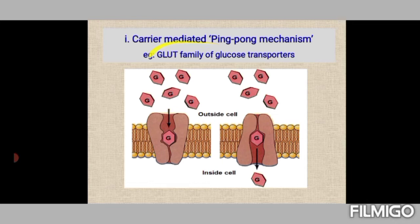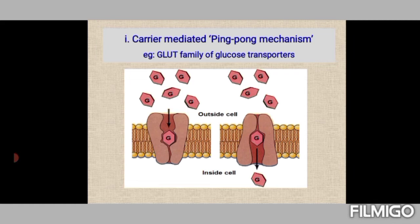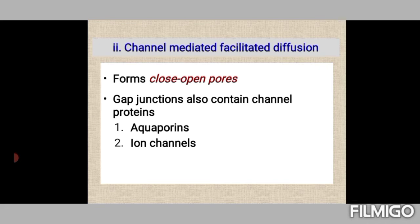Substances transported by facilitated diffusion include glucose, amino acids, nucleosides, and nucleotides. An example shown here is the GLUT transporter — a family of glucose transporters (GLUT1, 2, 3, 4, etc.). Glucose on the outside attaches to the transporter, causing a structural conformational change. This change lowers the transporter's affinity for glucose, and glucose is released inside the cell. This is a uniport mechanism as it transports one type of molecule in one direction only.